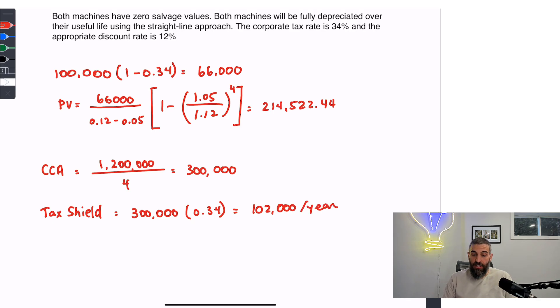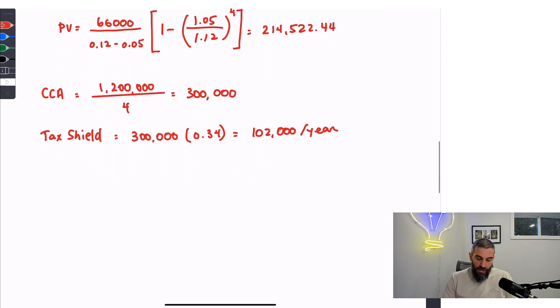Now I would need to find the present value of that number. Since this is an ordinary annuity, we can use the ordinary annuity formula or we can use a financial calculator. The present value is $66,000 multiplied by one minus one plus the discount rate to the power of negative four over the discount rate. So I'm using the formula for the present value of an ordinary annuity. And that is $309,810.